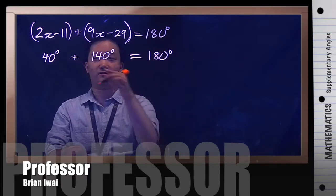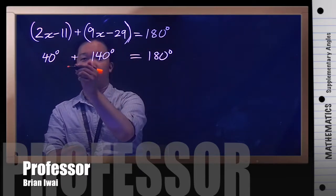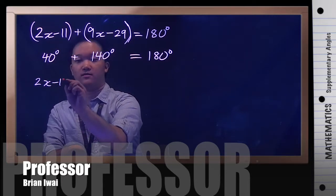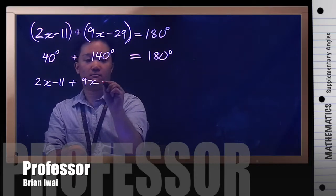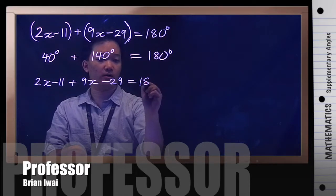So then after that it just becomes a solving for x problem. First you can get rid of the parentheses. You have 2x minus 11 plus 9x minus 29 equals 180.